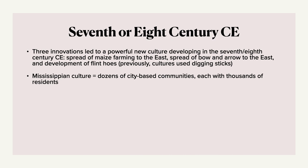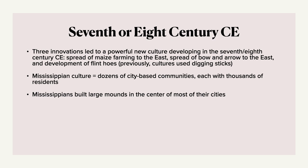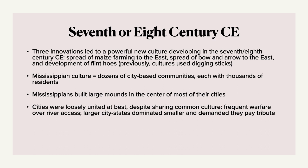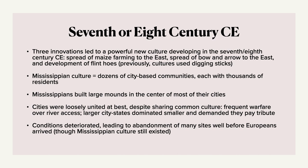The Mississippian culture consisted of dozens of city-based communities, each with thousands of residents. When you picture the United States before Europeans arrived, it wasn't a barren wasteland or a pristine empty continent — it was full of cities and humans. The Mississippians built large mounds in the center of most of their cities. Their cities were loosely united at best, and there's evidence of frequent warfare over river access. Many larger city-states dominated smaller ones and forced them to pay tribute. The conditions eventually deteriorated, leading to the abandonment of many sites well before Europeans arrived, though the Mississippian culture still existed.